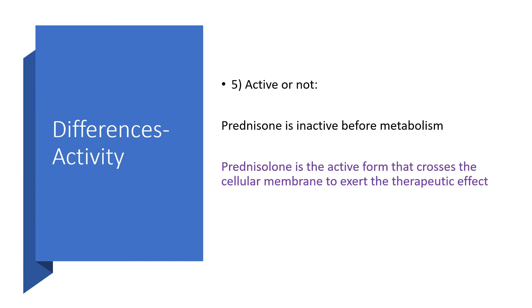Active or not: prednisone is inactive before metabolism. So if anything happens to the liver such that it cannot function well and you administer prednisone, you are not likely going to get the expected therapeutic effect. While prednisolone is the active form that crosses the cellular membrane to exert the therapeutic effect. Therefore, in the face of liver pathology, use prednisolone.